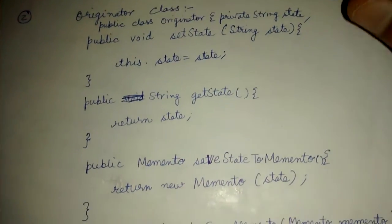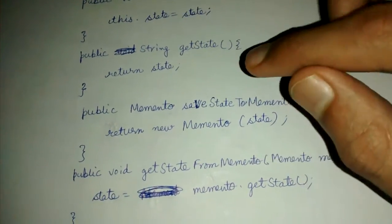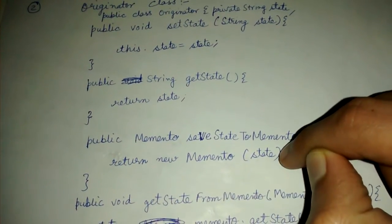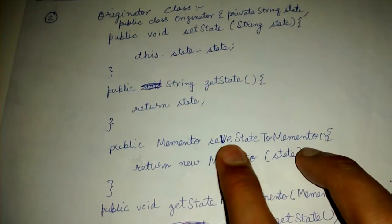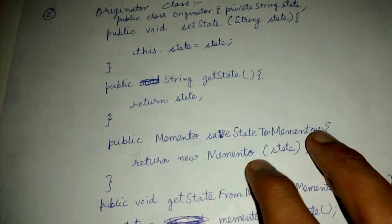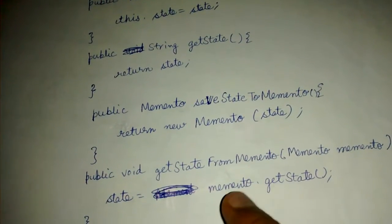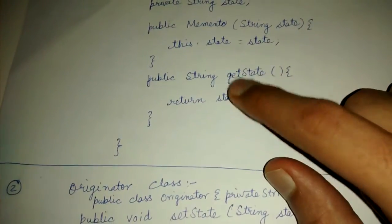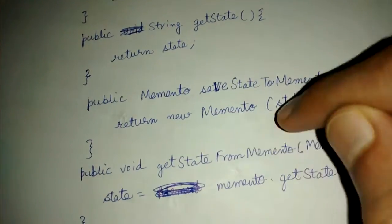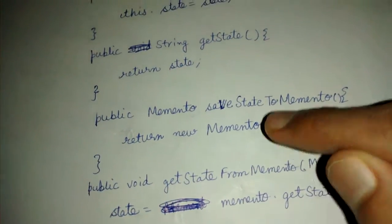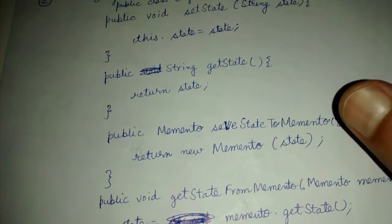Now let's look at the Originator class. This class is used to set the state, get the state, save the state to a memento, and get the state from a memento. Saving state to a memento means creating a new memento object with the current state as the argument and returning that object. For getting the state, we call memento dot get state, which returns the state.